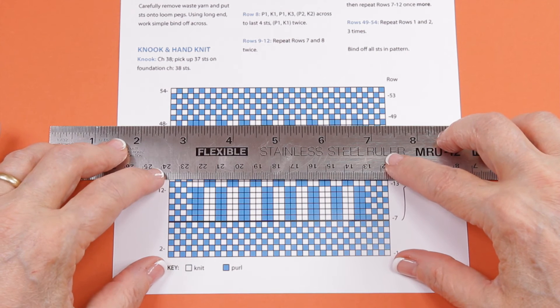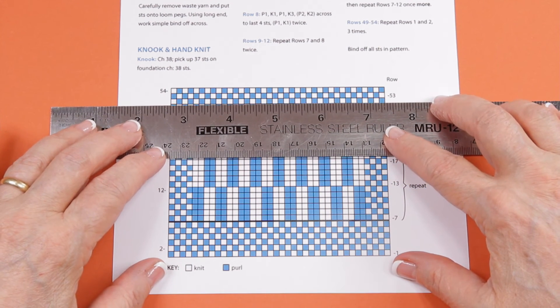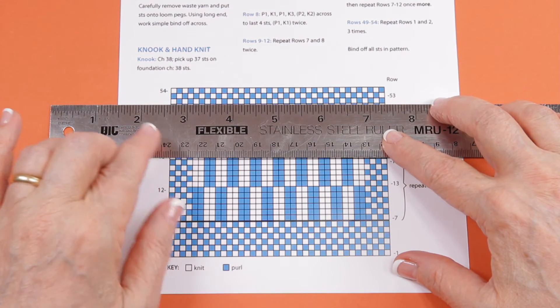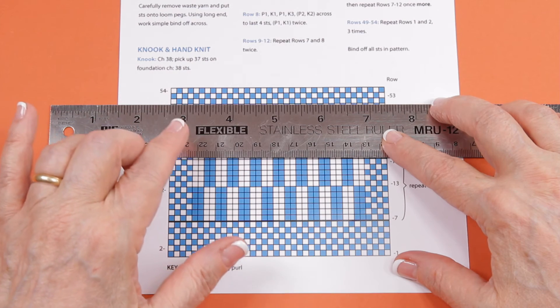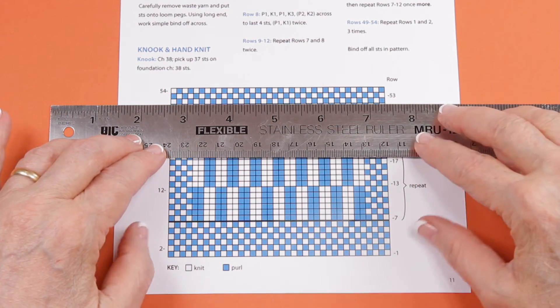It's very easy to follow a chart instead of written instructions. But if you have a problem following the chart, you can double check with the written instructions so that you understand what you're looking at.